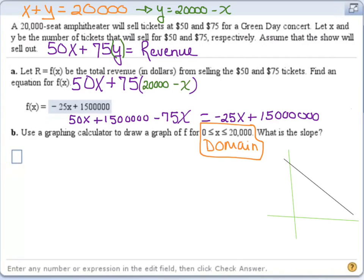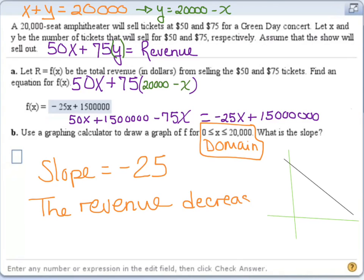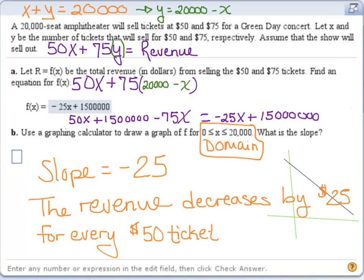The slope is negative 25. And what does that mean in terms of the situation? Well, it means that our revenue is going to decrease by $25 for every $50 ticket sold. Which should make sense because the difference in the price for the two tickets is $25. And if I sell a $50 ticket, I'm not selling it at $75. So we could write our sentence for the meaning of slope to be the revenue decreases by $25 for every $50 ticket sold.